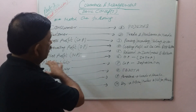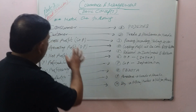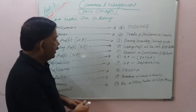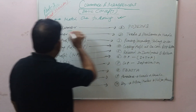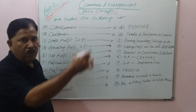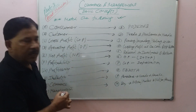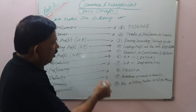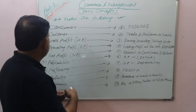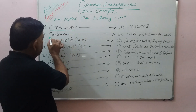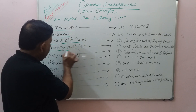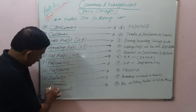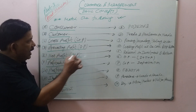Let's go through this. It's a world-class 'Match the Following' activity where you are supposed to match column A with options numbered 1 to 10, and column B with letters A to J. The terms to match include: consumer, customer, gross profit, operating profit, net profit, profitability, profiteering, industry, commerce, and management.